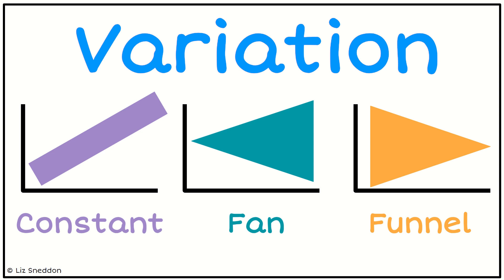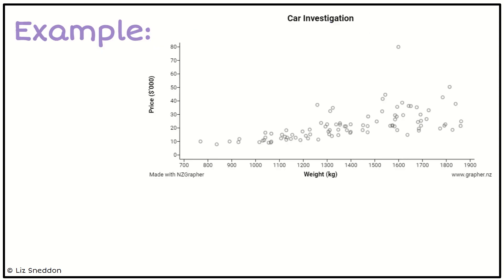When I talk about variation, I'm always talking about variation on the y-axis or the vertical axis. It's the variation in my response variable. Let's have a look at this car investigation looking at the weight of cars versus the price in thousands of dollars. First, I'm going to draw my blob around the data.